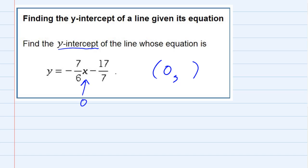So y would be -7/6 times zero minus 17/7. Well, since we plugged in zero, -7/6 times zero is just zero. So y equals -17/7.